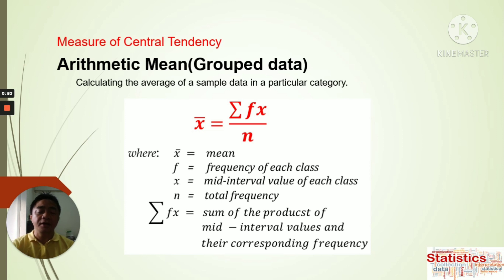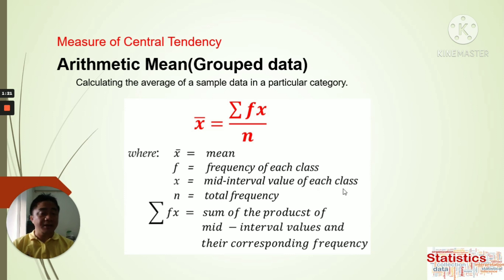So we have here the formula. We have x̄, the arithmetic mean, which is equal to the summation or sigma of fx — the product of f and x — divided by n, the number of terms. Here, f is the frequency and x is the midpoint of the scores or the data collected. x̄ is the mean, f is the frequency of each class, x is the mid-interval or midpoint value of each class, and n is the total frequency. We also need the sum of the products of mid-interval and corresponding frequency.